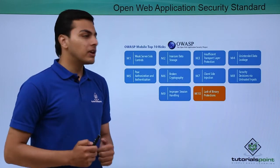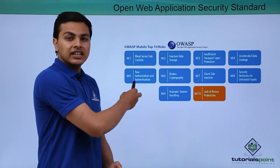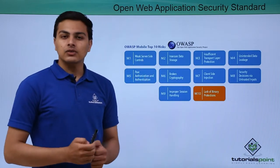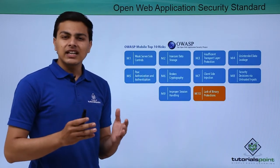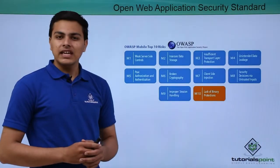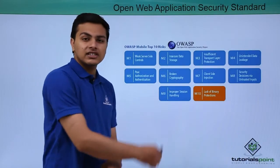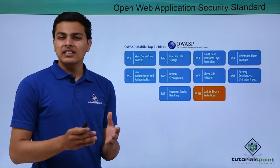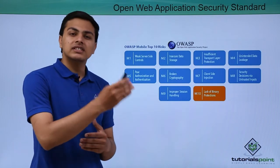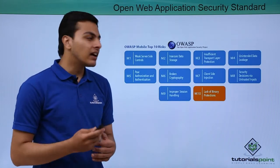At the top you can see M1, that is weak server side controls, and M2, that is insecure data storage. These kinds of issues are often found in a lot of Android applications. Insecure data storage arises when an application stores user data insecurely, meaning without encrypting the data.